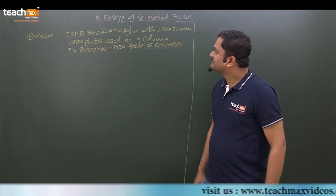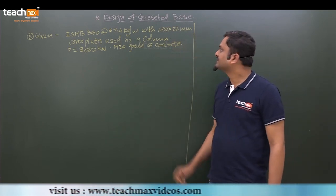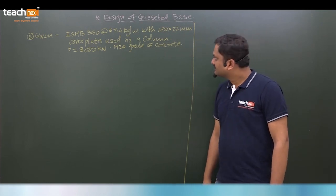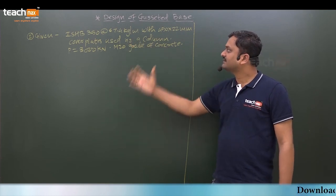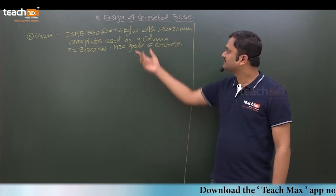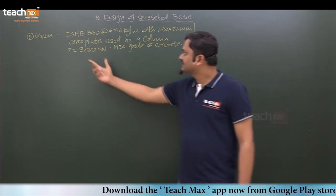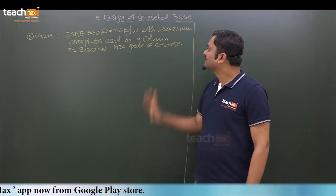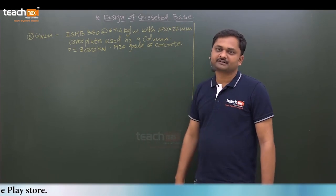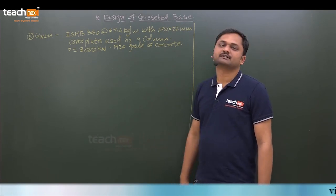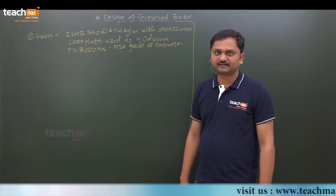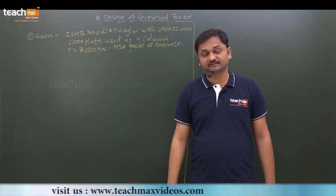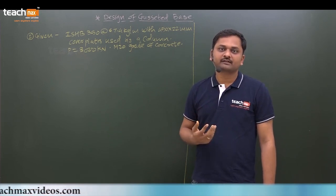Here is the given data: ISHB350 at 67.4 kg per meter with cover plates 450 by 22 mm are used as a column. This section and its cover plates provided on both flanges carry 3000 kilonewton factored axial compression. The column is subjected to axial compression with M20 grade of concrete used for the pedestal. This is the given data for which we are going to design gusseted base. This type of example might be asked for 10 marks in exam.